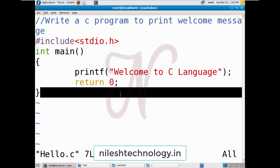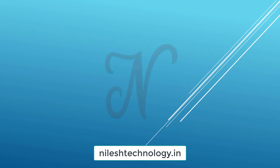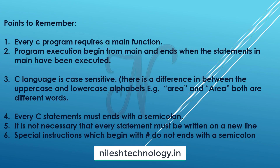Points to remember: every C program requires a main function — execution begins from main and ends when the statements in main have been executed. C language is case-sensitive: uppercase and lowercase letters are different, so 'area' and 'Area' are different identifiers. Every C statement must end with a semicolon. Special instructions beginning with # do not end with a semicolon — for example, #include does not end with a semicolon.